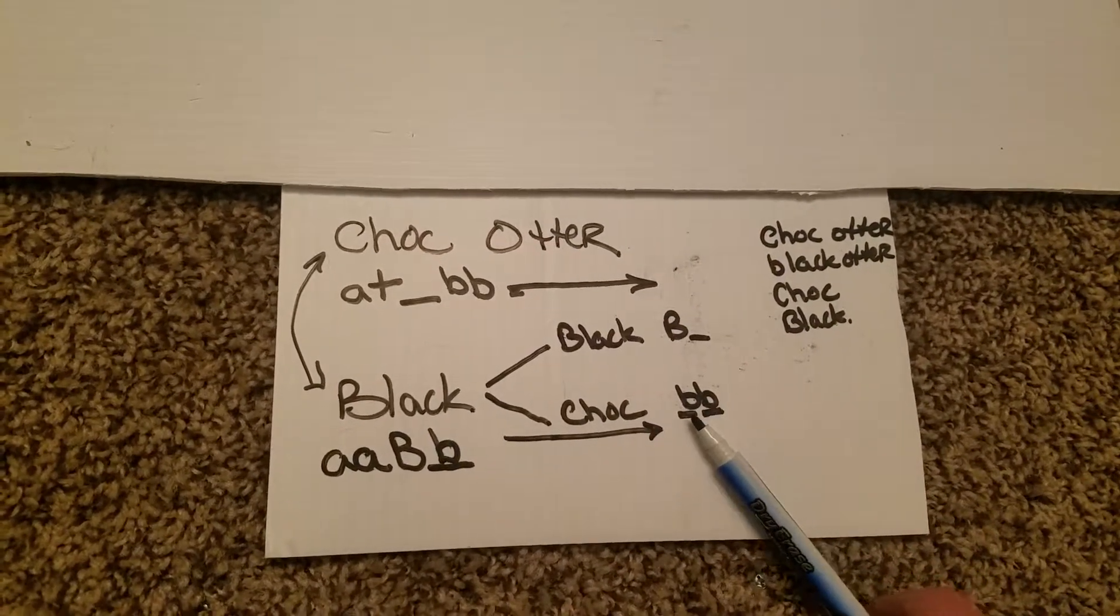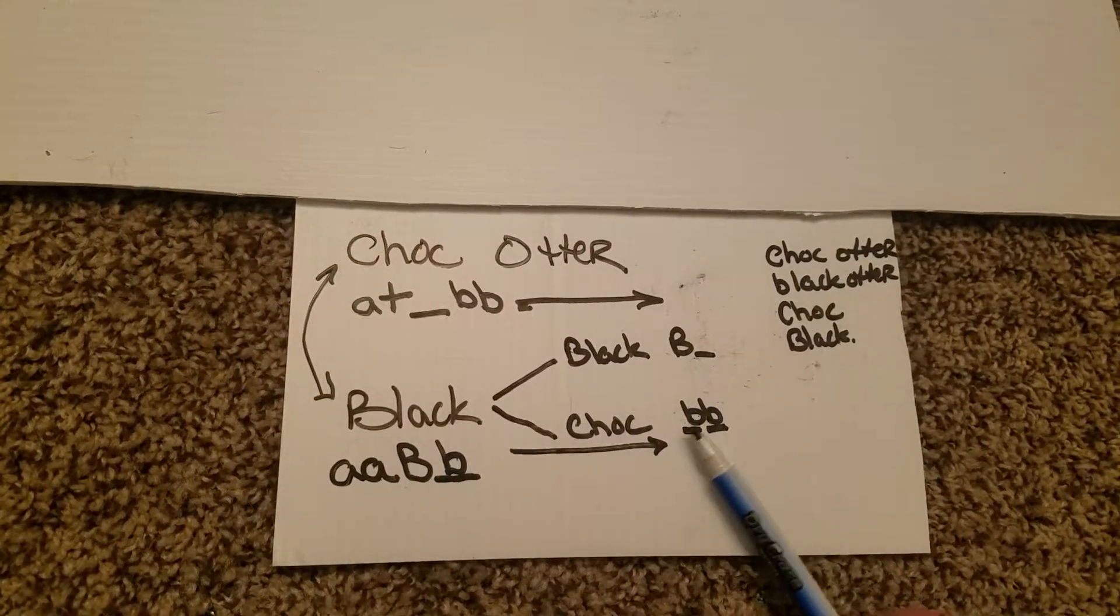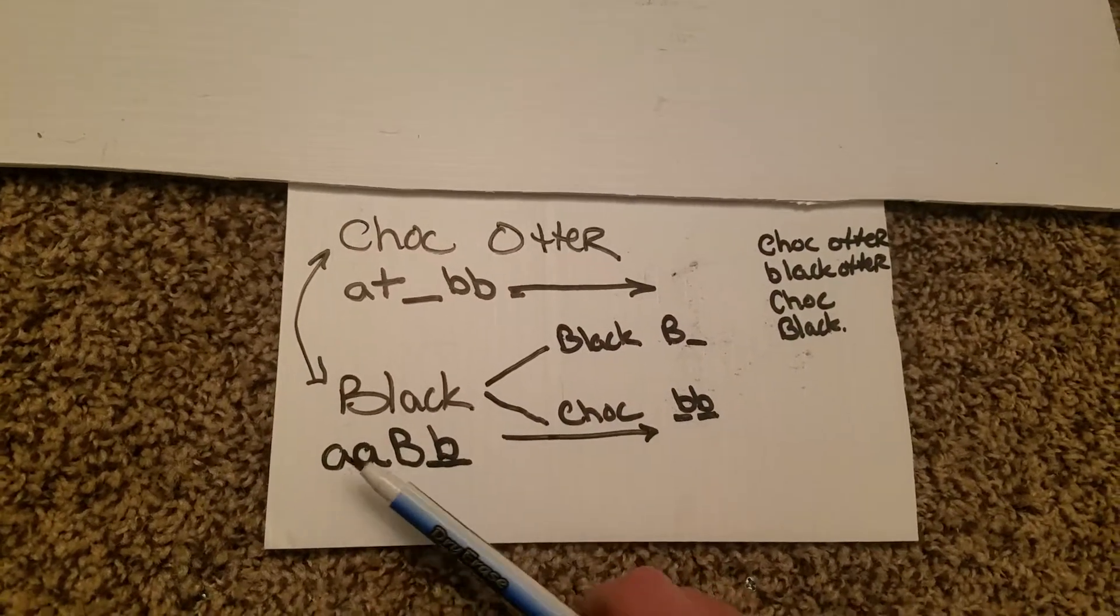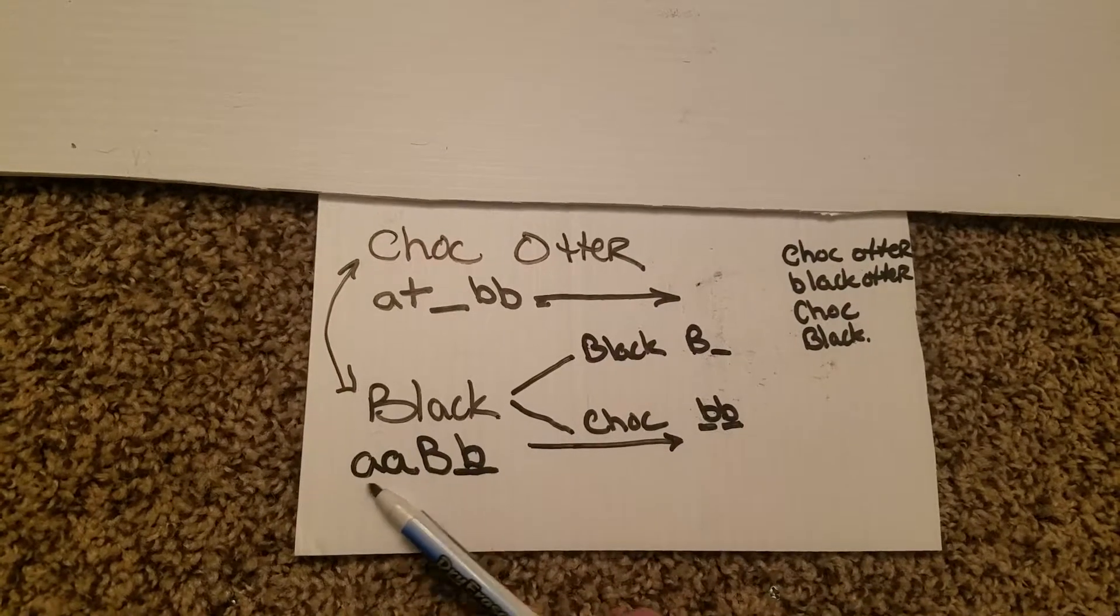The black was capital B. The chocolate we know is two lowercase b's. This lowercase b is the only thing that this rabbit here could have transmitted. So we know, based off of pedigree information from these parents, that this rabbit is marked this.